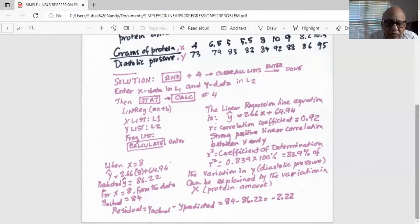Now for X is equal to 8 from the data given in the table, we find Y actual is 84. So what is the residual value? It's Y actual minus Y predicted, which is 84 minus 86.22 or minus 2.22.